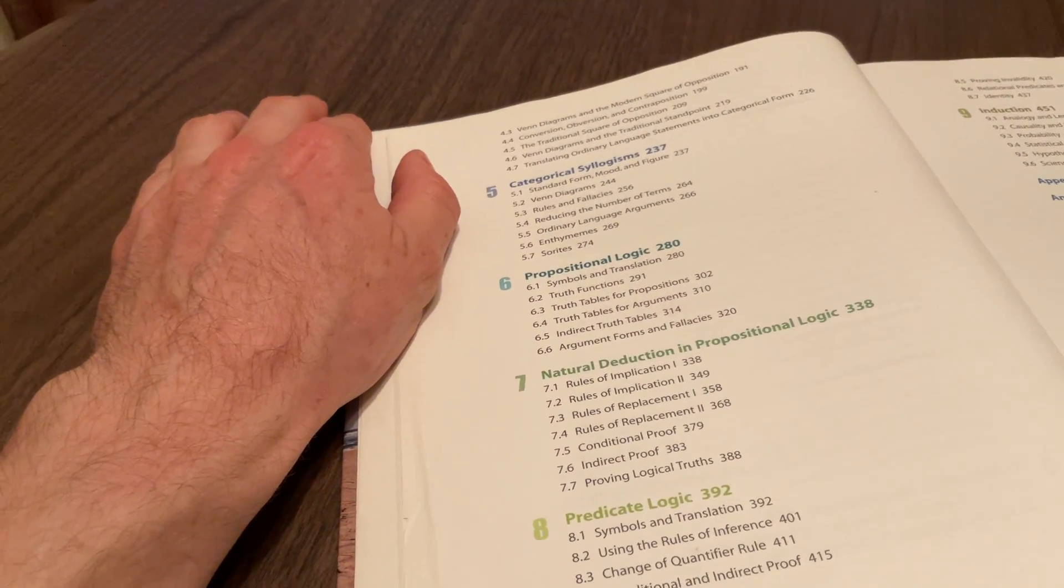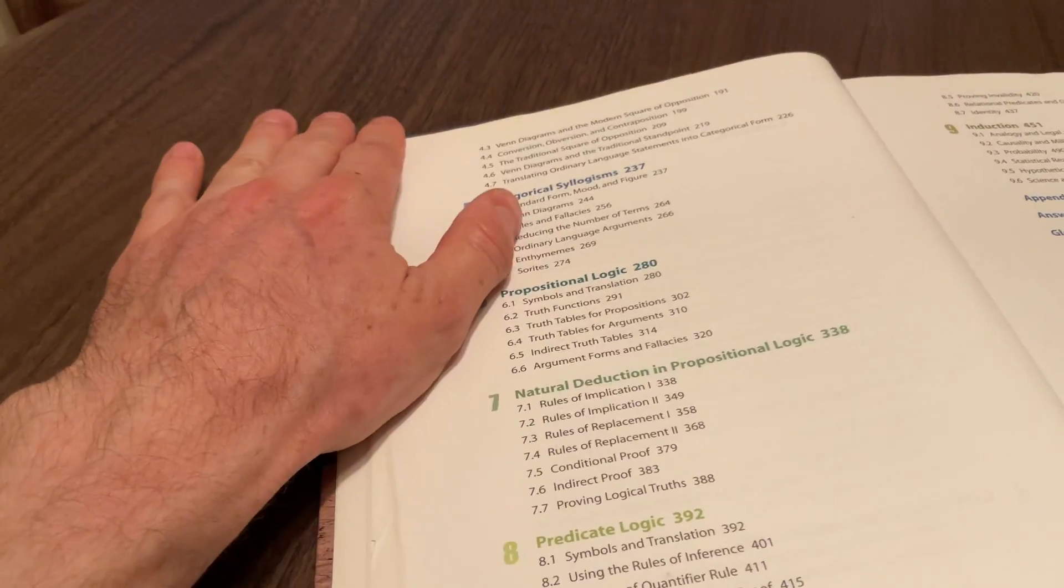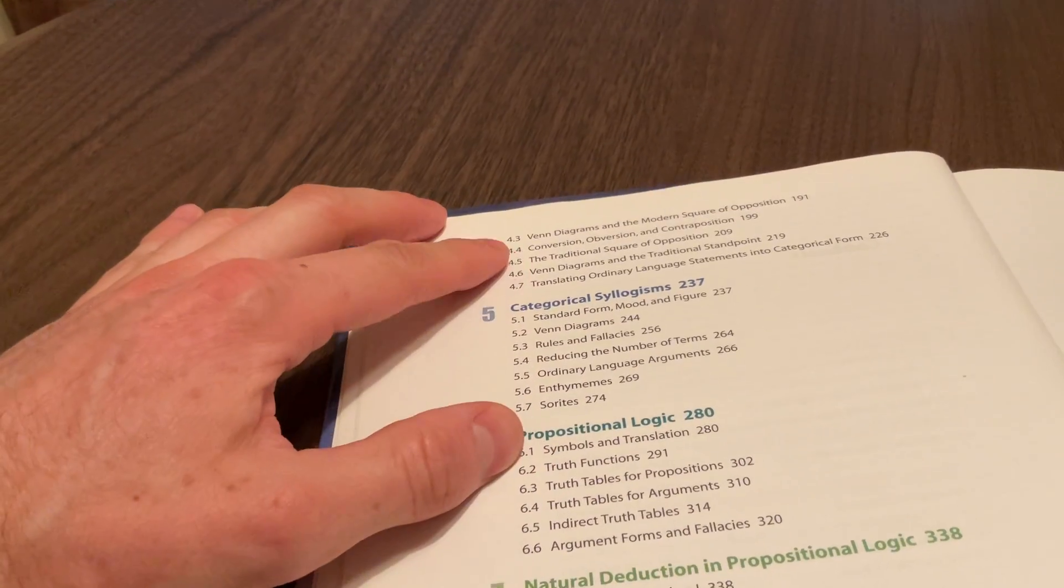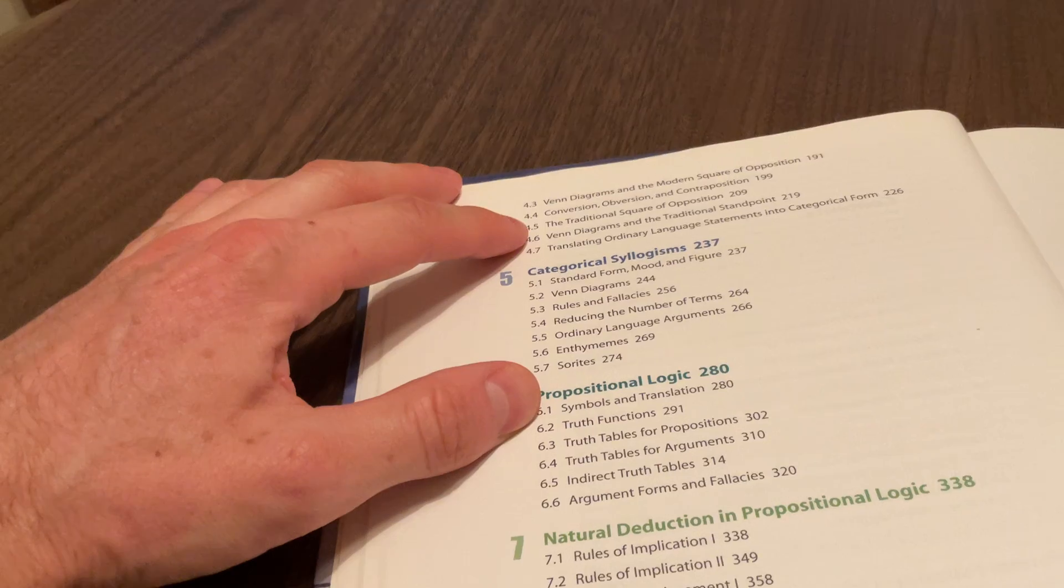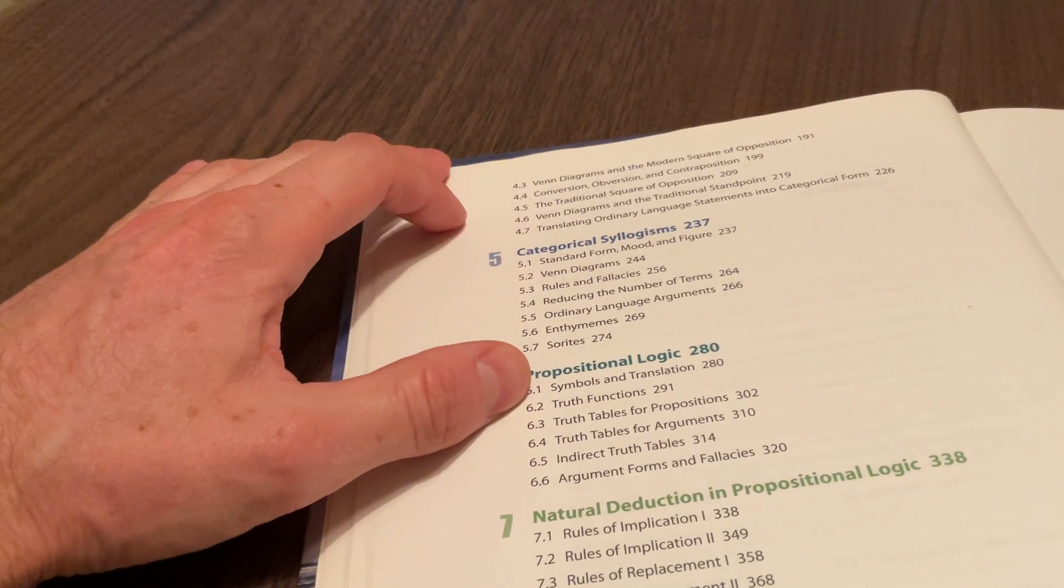For example, all men are mortal—that's a universal affirmative proposition. You can represent these types of propositions with Venn diagrams. We can think about the square of opposition and things like conversion, obversion, contraposition, that sort of thing.